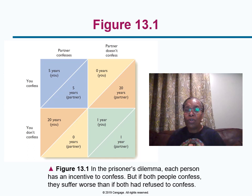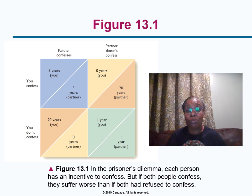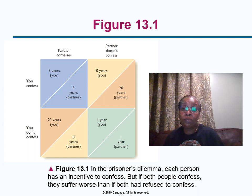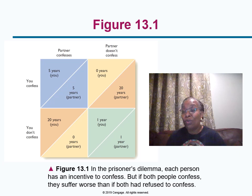Each person knows the other has the same options. If your partner doesn't confess and you confess, you go free. But if your partner confesses, you can still gain by confessing because you'll only get five years instead of twenty. So you confess. Your partner, reasoning the same way, also confesses — and you both get five years. If you had both kept quiet, you would only have served one year. It's a trap: both people are locked into uncooperative behavior.